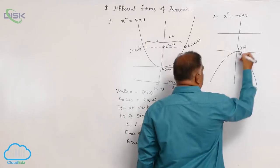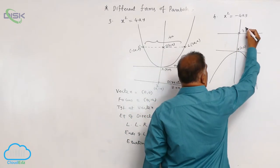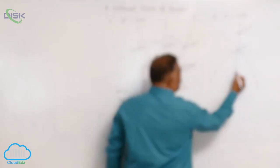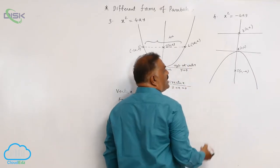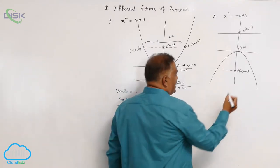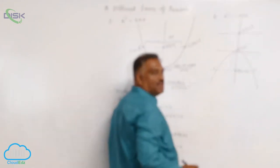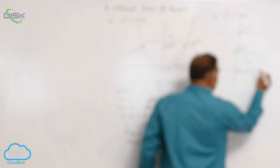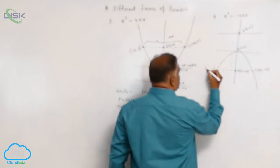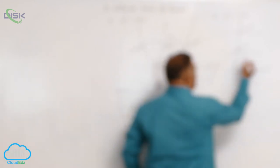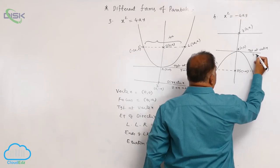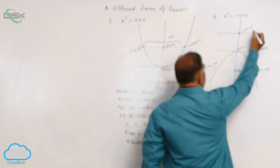For this downward parabola, the vertex is again (0, 0). The focus S is at (0, -a). These are the ends of the latus rectum, L and L'. The end (2a, -a) is in the fourth quadrant and (-2a, -a) is in the third quadrant. The tangent at the vertex is y = 0.